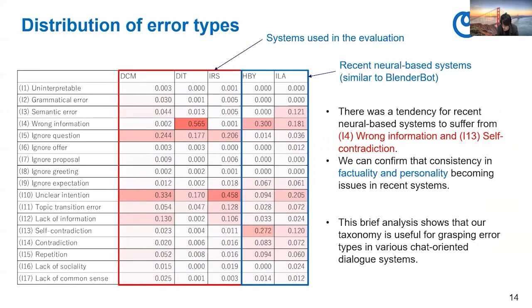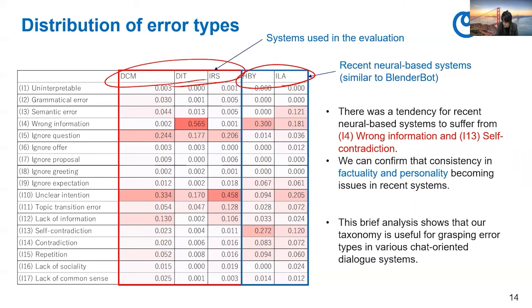This slide shows the distribution of error types across five systems. Three systems are from the evaluation in this paper. We also have results for two other systems, HBY and ILA, which are recent neural-based systems in Japan, quite similar to BlenderBot. There is a tendency for recent neural-based systems to suffer from I4 wrong information and I13 self-contradiction, confirming that consistency in factuality and personality is becoming an issue. This analysis shows that our taxonomy is useful for grasping error types in various chat-oriented dialogue systems.